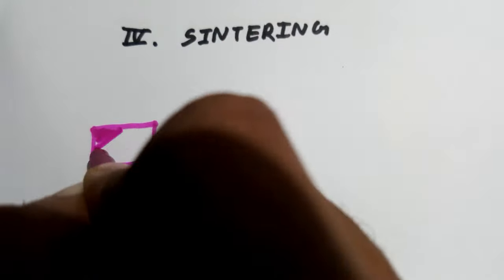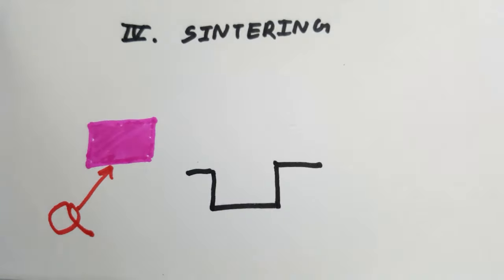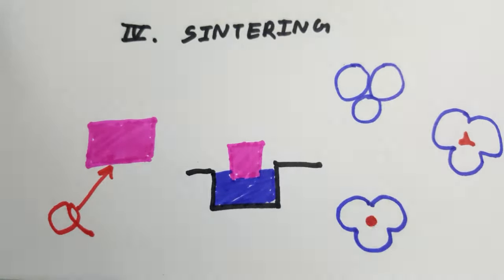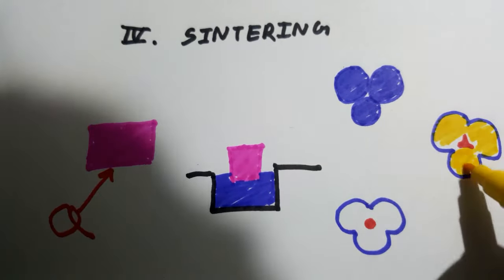Next comes the sintering process, which makes use of heat and soaking to help the compact crystal undergo neck formation, neck growth, and pore rounding, resulting in increased strength and hardness of the compact.